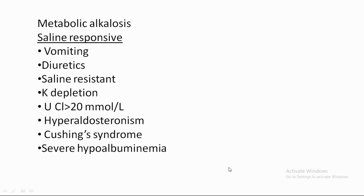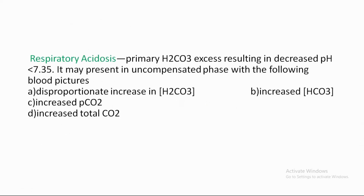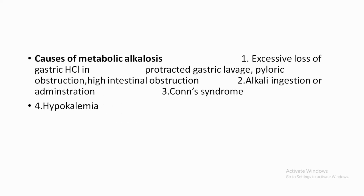The Saline Resistant type has a hormonal cause — hyperaldosteronism, Cushing's syndrome, and hyperreninism. This type does not respond to infusion of normal saline. The correction of metabolic alkalosis occurs at the bicarbonate level.